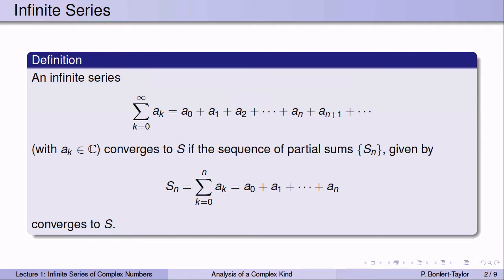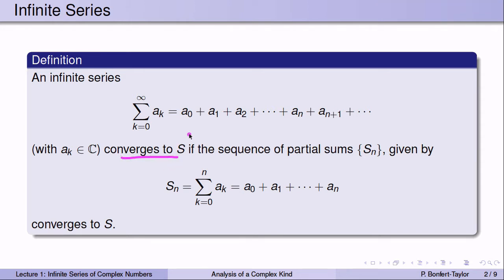Let's start with a definition. An infinite series is just an infinite sum when I add up infinitely many numbers. We say such a series converges to a number s — and s is also going to be a complex number — if the sequence of partial sums, so the sequence you get when you stop at a certain point and then move that point further and further back, converges to s.